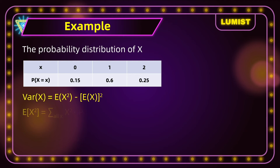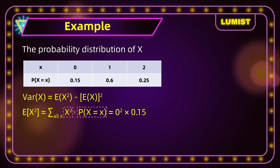First we find E[x²]: 0² × 0.15, plus 1² × 0.6, plus 2² × 0.25. When we calculate this, we get 1.6.